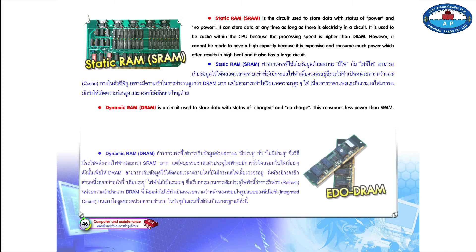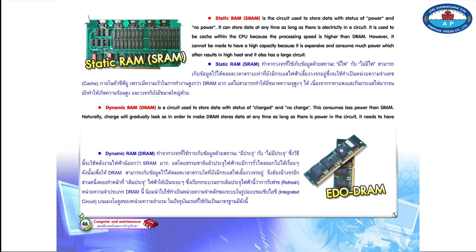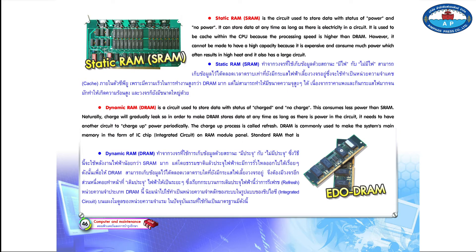Dynamic RAM (DRAM) is a circuit used to store data with a status of charged and no charge. This consumes less power than SRAM. Naturally, charge will gradually leak, so in order to make DRAM store data at any time as long as there is power in the circuit, it needs another circuit to charge up power periodically. This charge-up process is called refresh. DRAM is commonly used to make the system's main memory in the form of an IC chip (integrated circuit) on a RAM module panel.